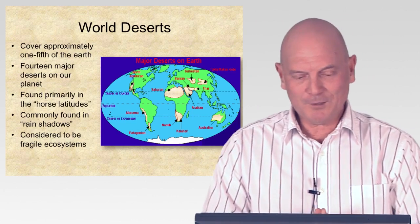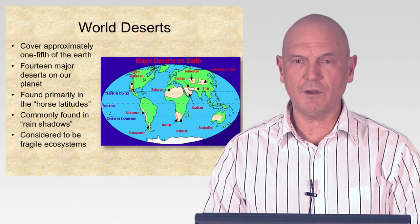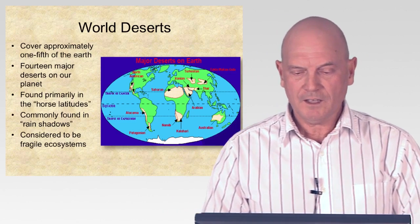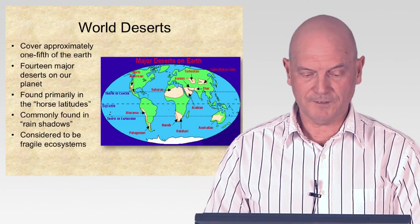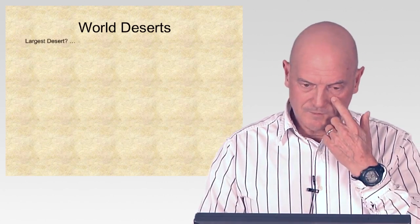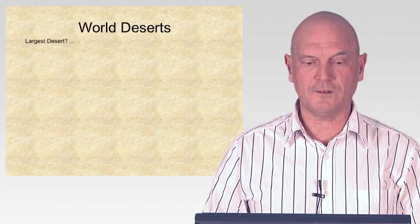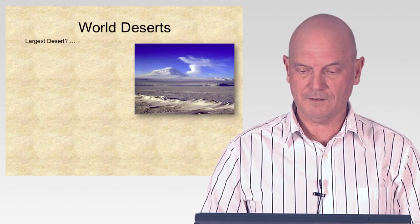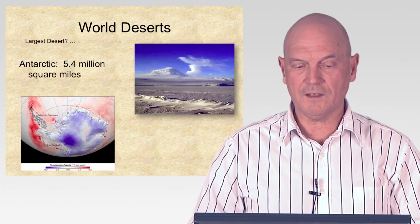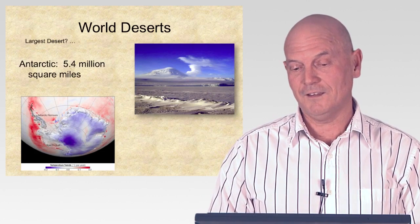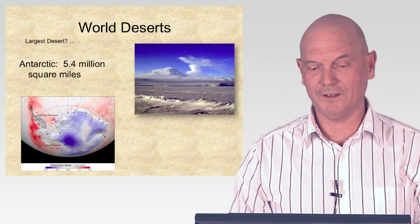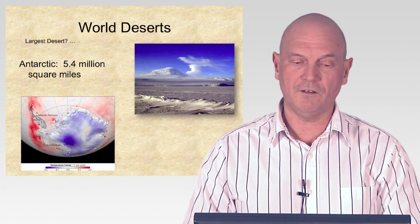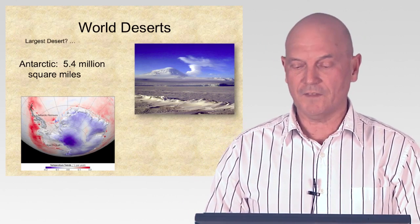Getting back to deserts — these are considered to be very fragile ecosystems since they don't get very much rain, there's not very much plant production, and there's a lot of evapotranspiration. Now, what's the largest desert? Here's a hint: it's really cold with lots of snow. It's Antarctica — the largest desert at 5.4 million square miles. It's not a hot desert but a cold one, getting less than 10 inches of precipitation a year.